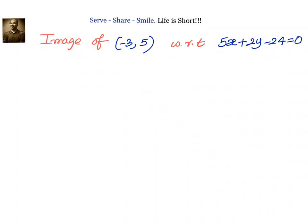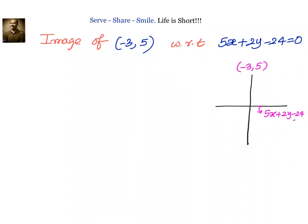Whenever we say image of a point with respect to a line, immediately we know the point and the line are perpendicular to each other. Let me put a small diagram. The point is (-3, 5), and the line will be perpendicular to the point. The equation of the line is given as 5x + 2y - 24 = 0. The image means we need to find out the coordinates of this point x1 comma y1, which is the image with respect to the mirror line 5x + 2y - 24 = 0.